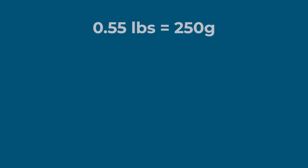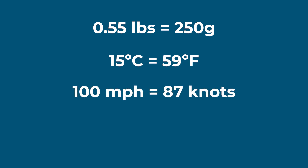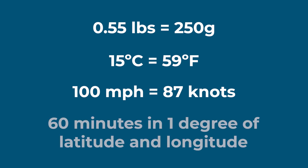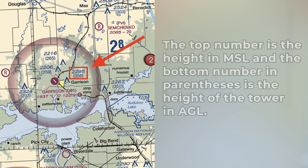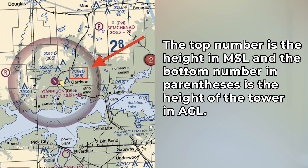Understanding units and standards can be the difference between a right and wrong answer. Here are some common ones to learn and remember: 0.55 pounds equals 250 grams, 15 degrees Celsius equals 59 degrees Fahrenheit, 100 miles per hour equals 87 knots, and there are 60 minutes in one degree of latitude and longitude. Also keep in mind that altitudes in parentheses refer to above ground level (AGL), while all other altitudes are in mean sea level (MSL).